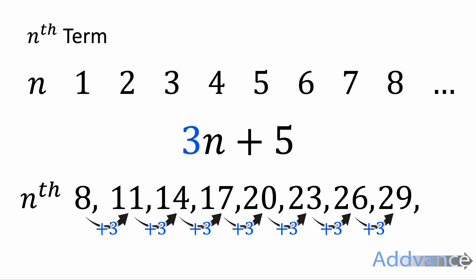Notice that the amount it's going up by each time - the three, the plus three - is the number in front of the n. So 3n plus 5, the number in front of the n is three, and it's going up by three each time.